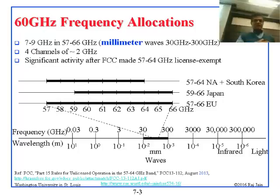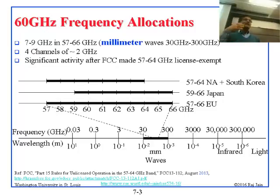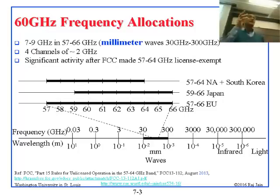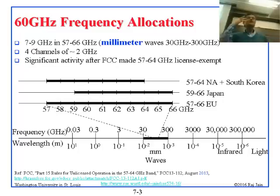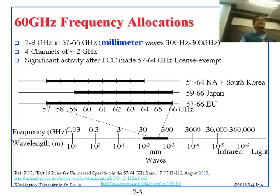With 2 gigahertz channels, if you do the simplest thing — BPSK, 1 bit per hertz — you get a lot of gigabits per second. You don't have to work very hard to get gigabit speeds out of gigahertz of bandwidth. So that's what is happening here.